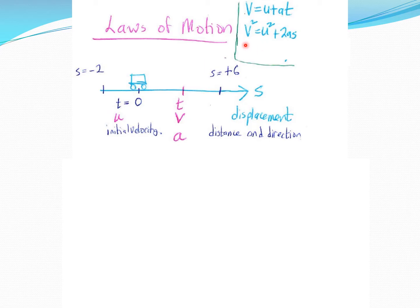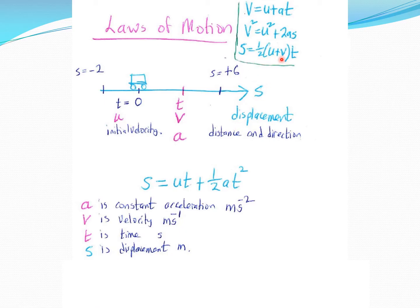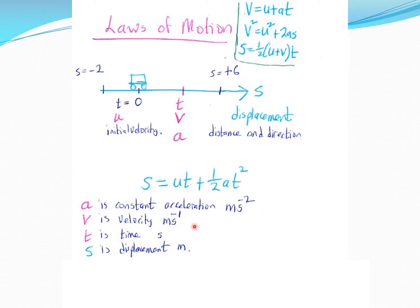The second law: v² = u² + 2as. The third law — the one we'll use — is s = ut + ½at². Here s is displacement, u is initial velocity, t is time, and a is constant acceleration measured in meters per second squared.